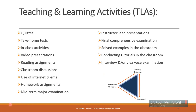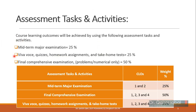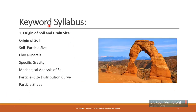Regarding assessment tasks and activities, you can see the distribution of various assessment activities and their marks. The major midterm examination carries 25% weightage, the final comprehensive examination carries 50% weightage, and quizzes, assignments, take-home assignments, viva voce, etc. carry up to 25% weightage. For the CLO distribution: CLO 1 and CLO 2 will be covered in the midterm, while all CLOs will be covered in the final and sessional assessments.